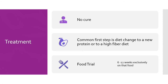For treatment, you are mainly treating the symptoms of IBD. If you do identify IBD, there is no cure — especially for idiopathic types where you don't know the cause. The first step is a diet change to a different protein or a high-fiber diet. If food is the cause, symptoms should improve or resolve. This involves a food trial: 6 to 12 weeks on only that one food with no treats, as anything different can skew the results.